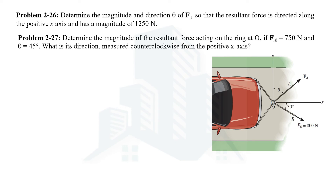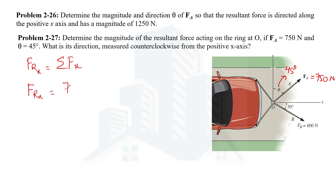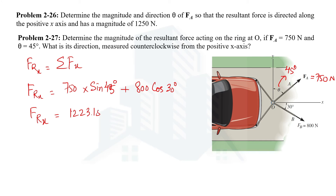Using the same concept, the x-component of the resultant force equals the summation of x-components of all forces making the resultant. The x-component of FA is 750·cos(45°) — since the angle is 45°, sine and cosine give the same result. The x-component of the 800 N force is 800·cos(30°). On simplifying, the x-component of the resultant force FRx = 1223.15 newtons.